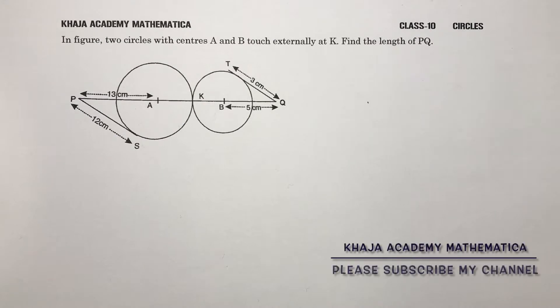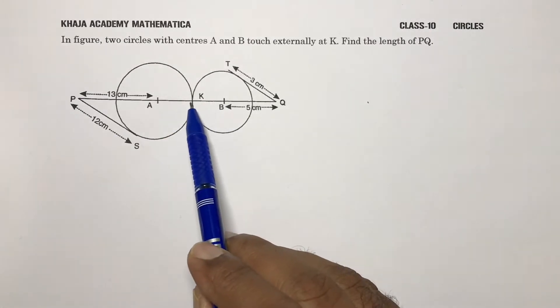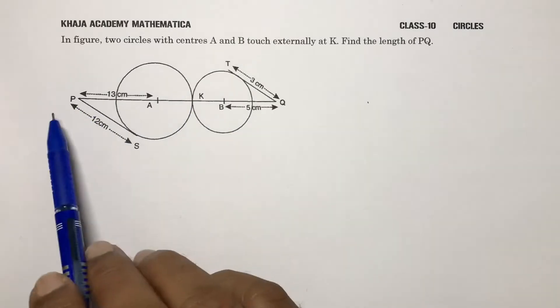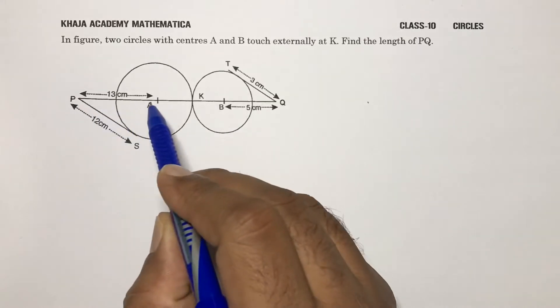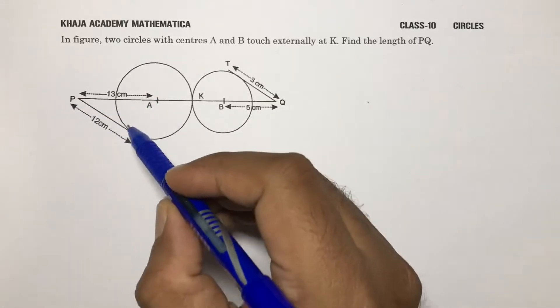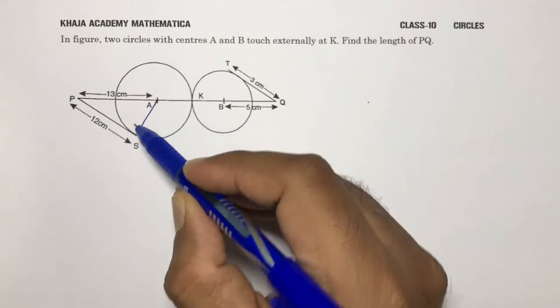In the figure, two circles with centers A and B touch externally at K. Find the length of PQ. We'll take PA as the center, PS is a tangent. If you join AS, the angle between radius and tangent is 90 degrees.